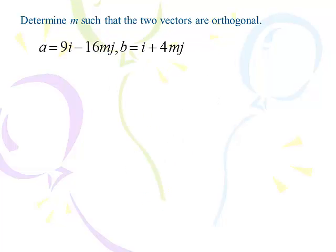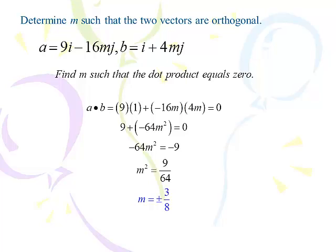Determine m such that vectors 9i - 16mj and i + 4mj are orthogonal. Set the dot product to zero: 9×1 + (-16m)×4m = 0, giving 9 - 64m² = 0. Subtract 9 from both sides: -64m² = -9. Divide by -64: m² = 9/64. Taking the square root of both sides (with ±): m = ±3/8. So m can be positive 3/8 or negative 3/8 — two solutions.